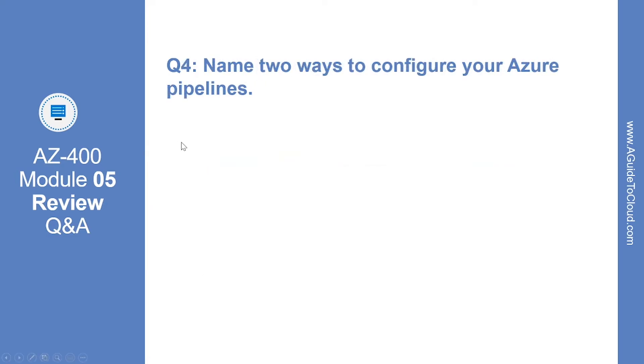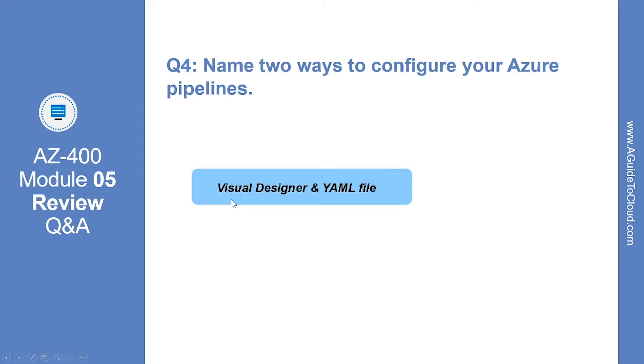Question number four: Name two ways to configure your Azure Pipelines. The correct answer is the visual designer and using a YAML file.